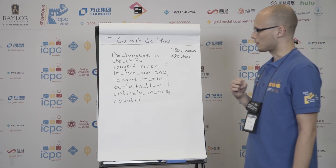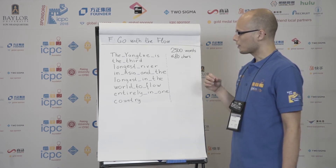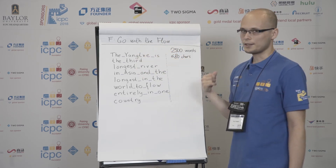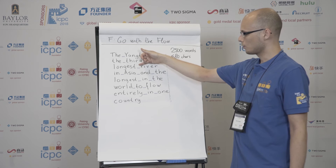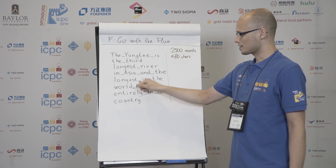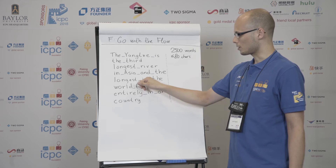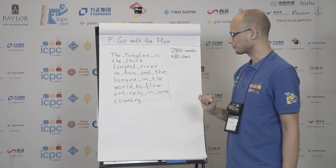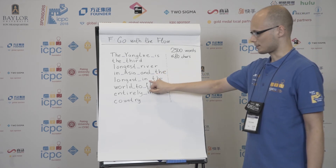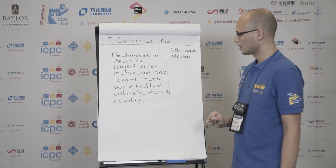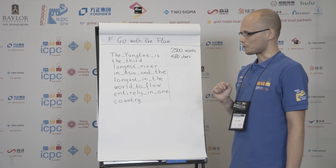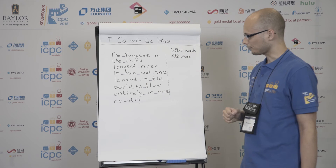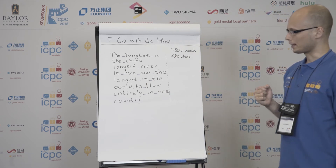What we mean by river: a river is a sequence of spaces between words that are either directly below each other, or adjacent to the left or to the right. Here we have a space that is adjacent to the right, and here a space that is adjacent to the left. The length of the river is the number of spaces in it, so here we have a river of length 5. We are to maximize the length of this river.